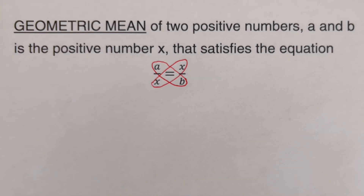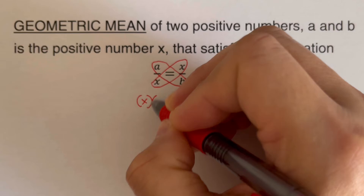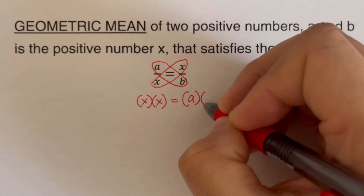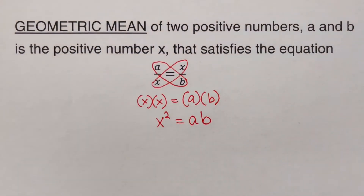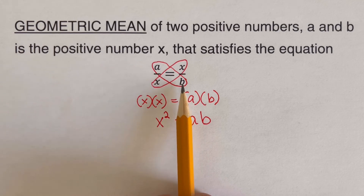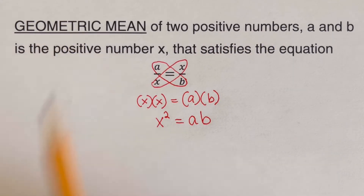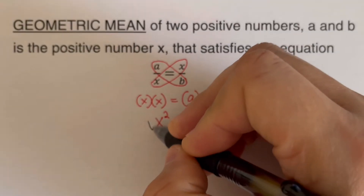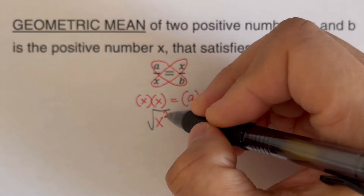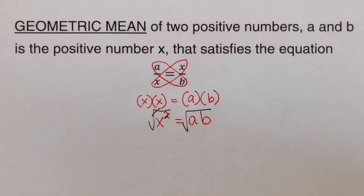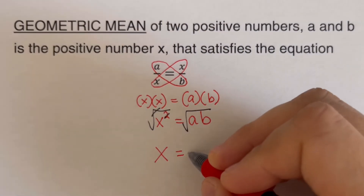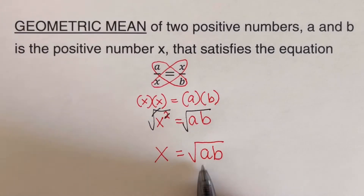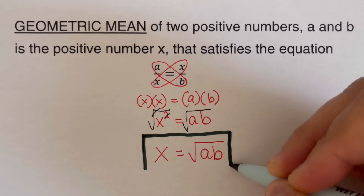Using the cross-product property of proportion, we get x times x equals a times b, so x squared equals ab. Solving for x, we take the square root of both sides. The general formula for geometric mean is x equals the square root of ab — we multiply the two numbers together and take their square root.